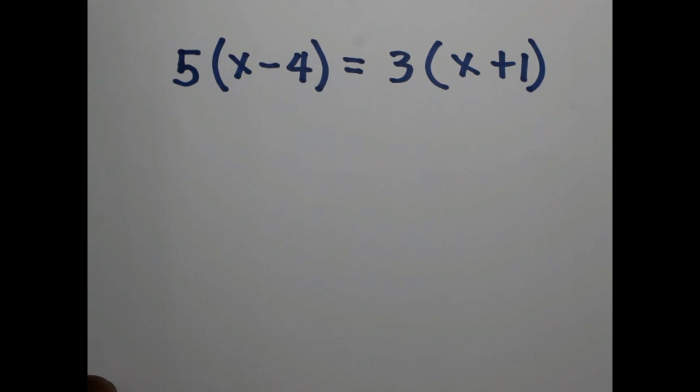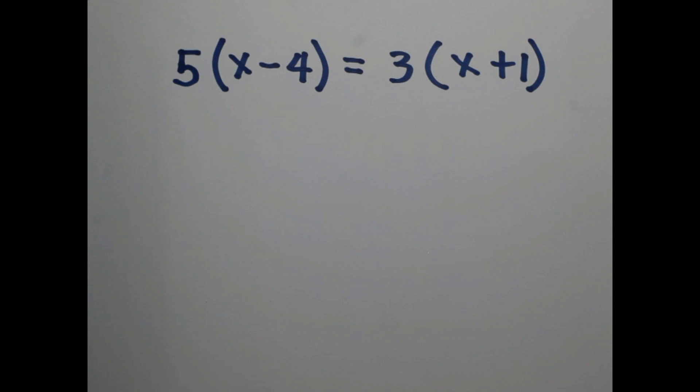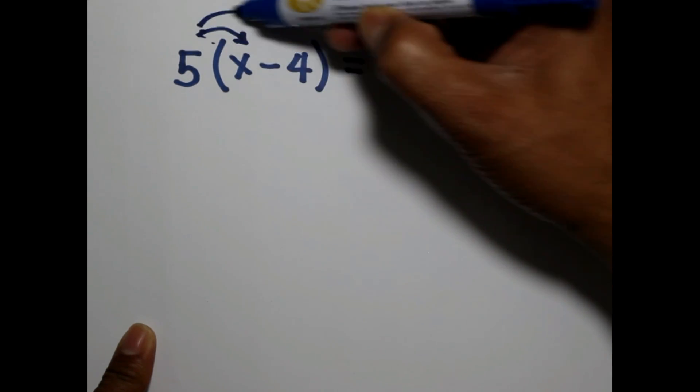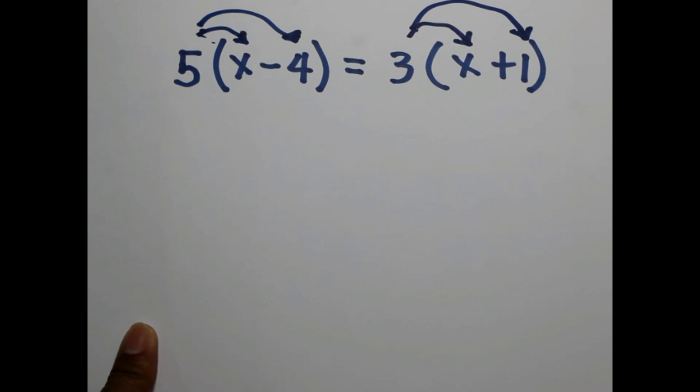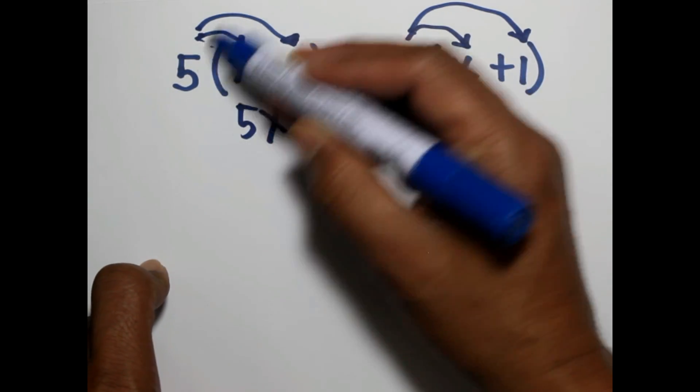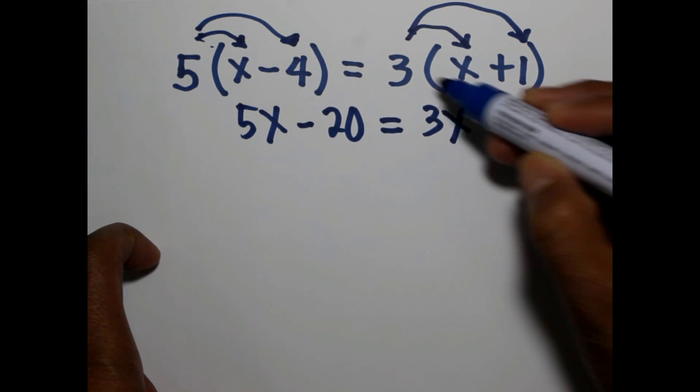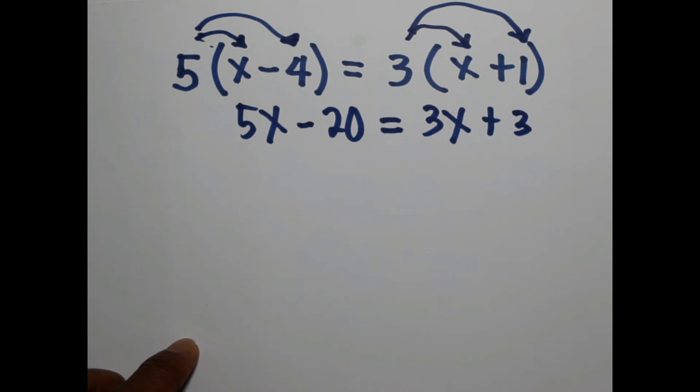5 multiplied to the difference between x and 4 is equal to 3 multiplied to the sum of a number and 1. To solve this, we are going to distribute. We will apply the distributive property: 5 to x, 5 to negative 4, and 3 to x and 3 to positive 1. So 5 times x is 5x, 5 times negative 4 is negative 20, equals 3 times x is 3x, 3 times 1 is positive 3.